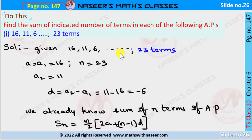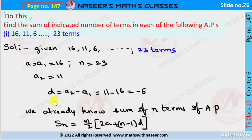The given series is 16, 11, 6, and so on. The first term a₁ = 16, the second term a₂ = 11, the third term a₃ = 6, and the number of terms n = 23. The common difference d = a₂ − a₁ = 11 − 16 = −5.